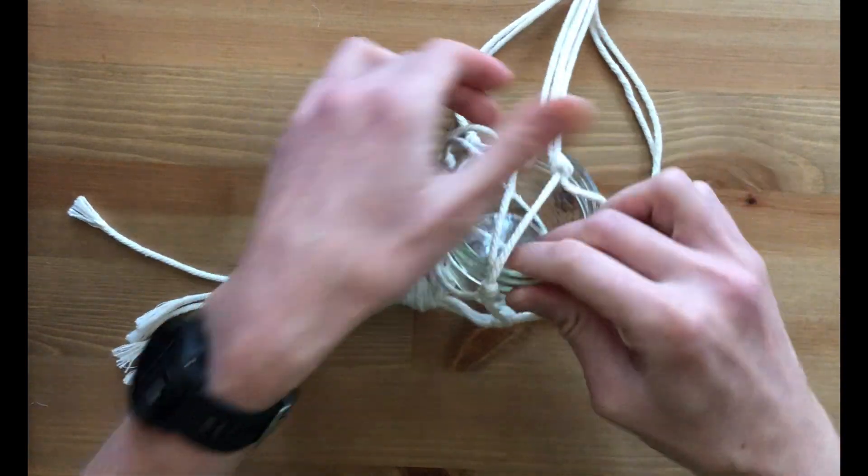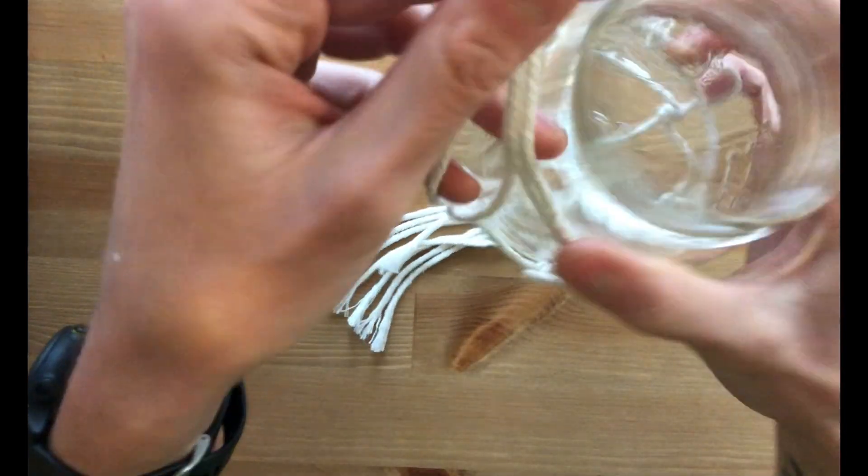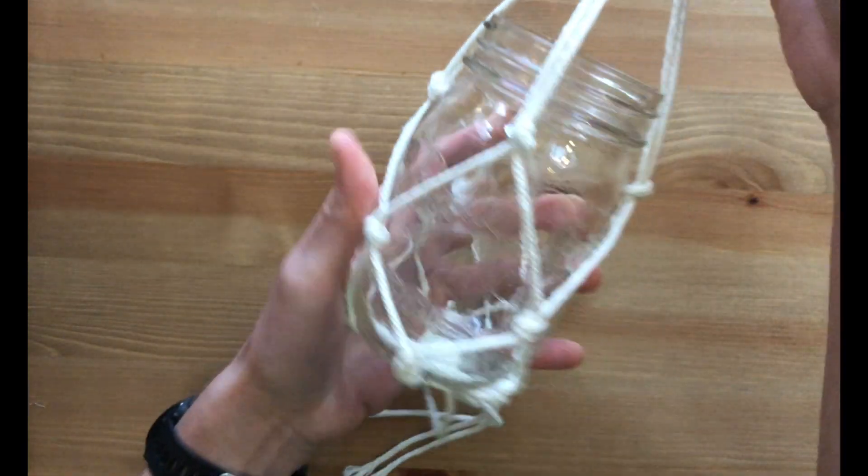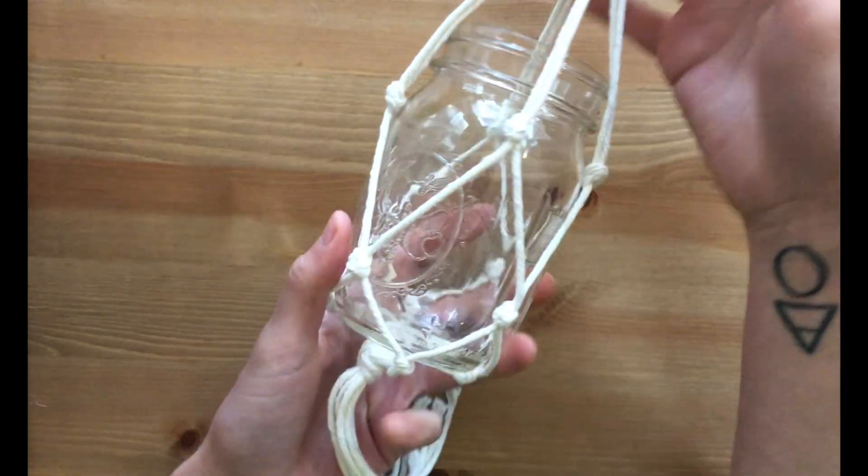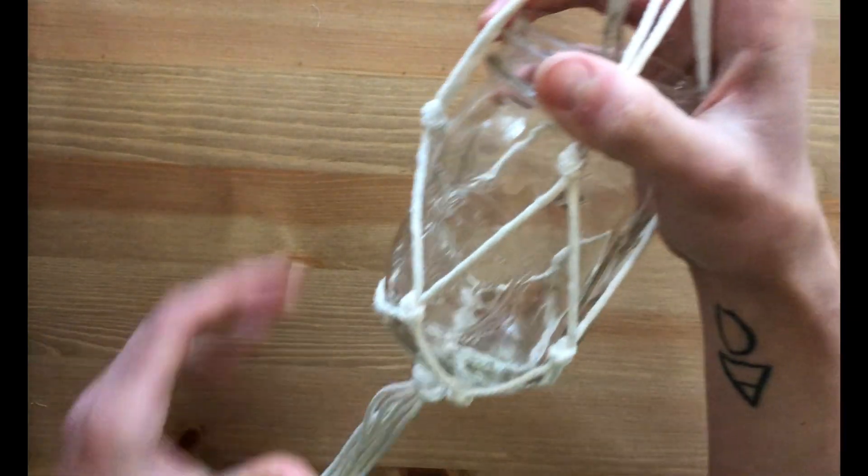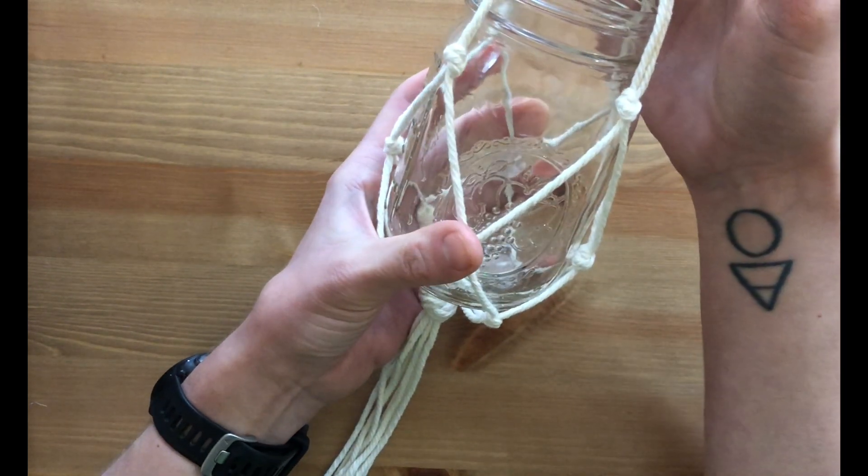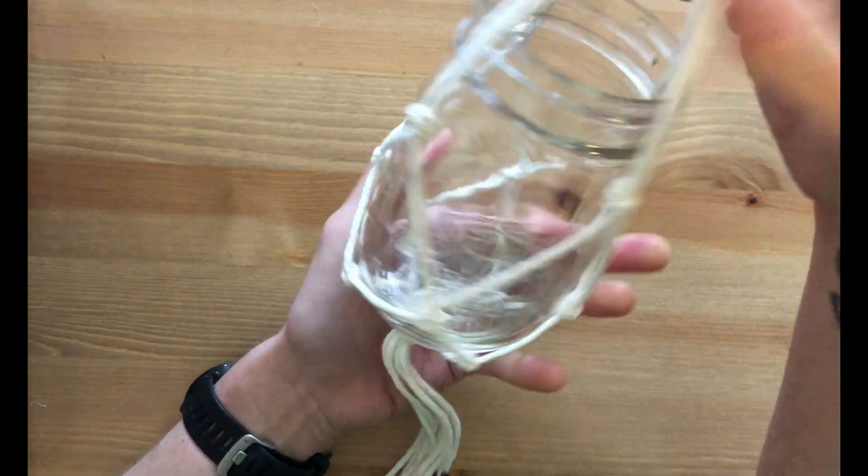This one will also work with a larger size jar. There, that is very cute too. So you can plant a little plant in there like a leaf clipping, or you can put some LED tea lights. And there you have it.